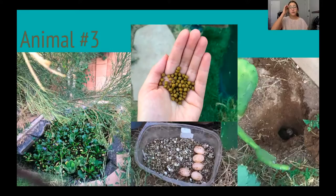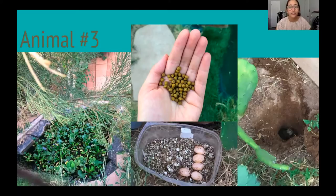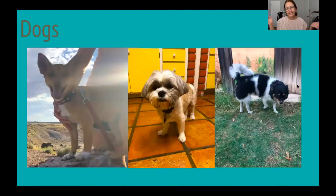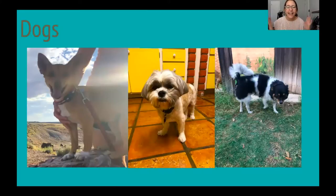If you have to pause right now you can go back in the video to check out the other pictures, but at this point you should have all three animals written down for what you think they might be. You ready to see the answers? I think picture number one was a little easy because of the dog silhouettes on the bottom. You guessed it — I have three dogs!